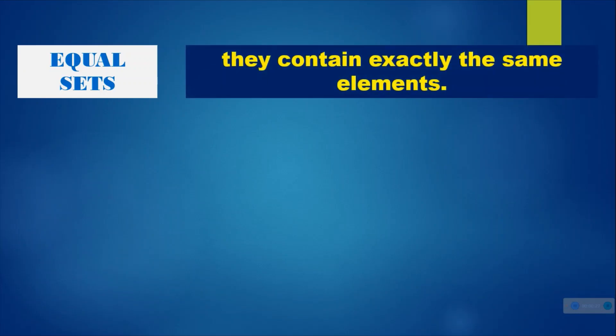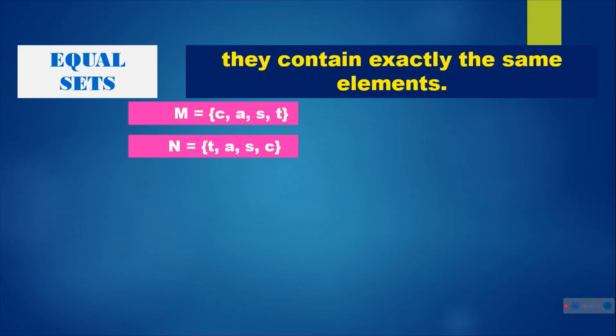We have equal sets. Equal sets contain exactly the same elements. For example, set M is equal to {C, A, S, T} and set N is equal to {T, A, S, C}. So they have the same elements, so we call them equal sets, meaning M is equal to N.